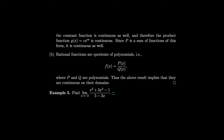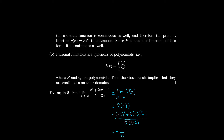Since rational functions are continuous on their domains, we can use direct substitution to evaluate limits. For example, the limit as x→−2 of (x³+2x²−1)/(5−3x) equals f(−2) = (−8+8−1)/(5+6) = −1/11. Notice x=−2 is in the domain, so the function is defined and continuous there, making direct substitution valid.